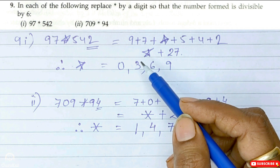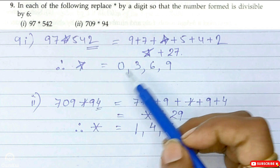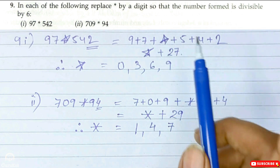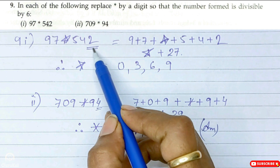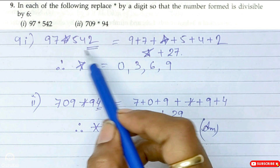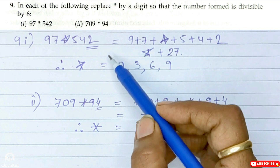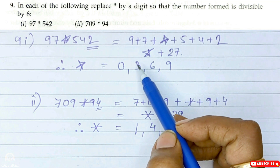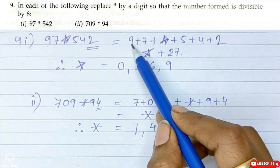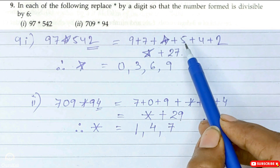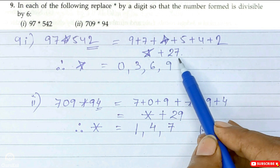The divisibility test for 6 requires us to check whether the given number is divisible by both 2 and 3. For 2, we look at the last digit — the last digit is even, which means the entire number is divisible by 2. For 3, we find the sum of the digits: 9 plus 7 plus star plus 5 plus 4 plus 2, giving us star plus 27.